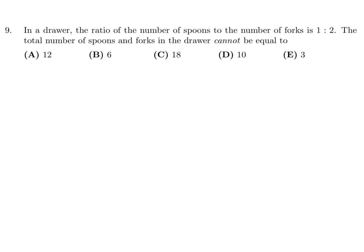In a drawer, the ratio of the number of spoons to the number of forks is 1 to 2. The total number of spoons and forks in the drawer cannot be equal to. So spoons to forks, S to F, is 1 to 2. So if you cross multiply, you get F is equal to 2S.